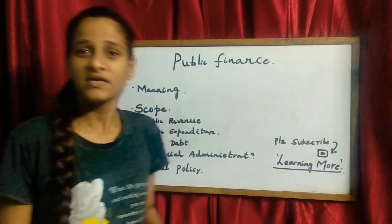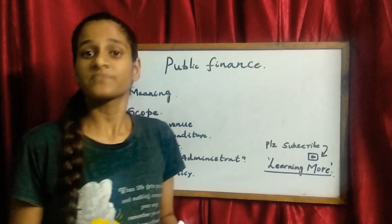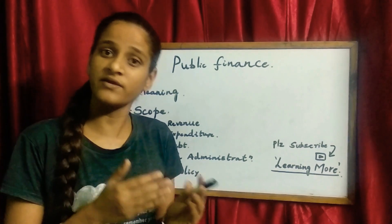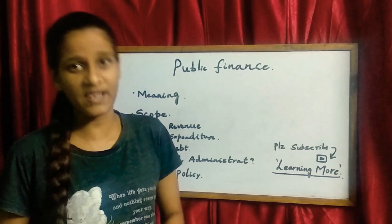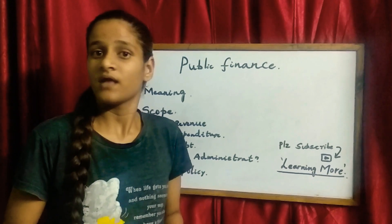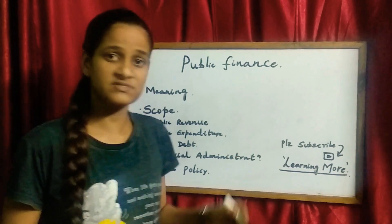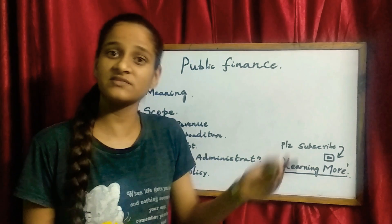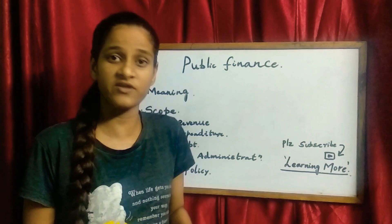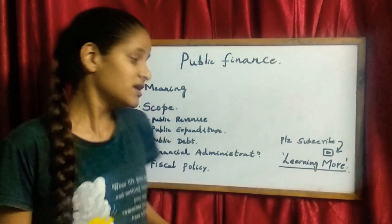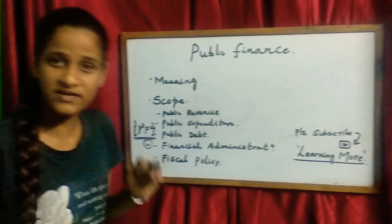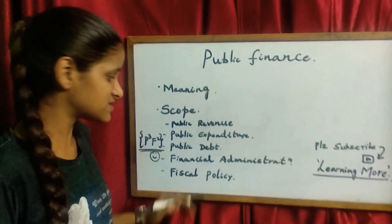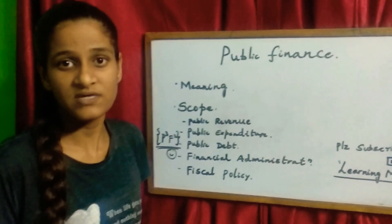Fiscal policy — here we study about how the government is going to control the supply and the demand for money. Because if the supply of money increases, it may lead to inflation. When the supply of money decreases, it may lead to deflation. All these things we learn under fiscal policy.